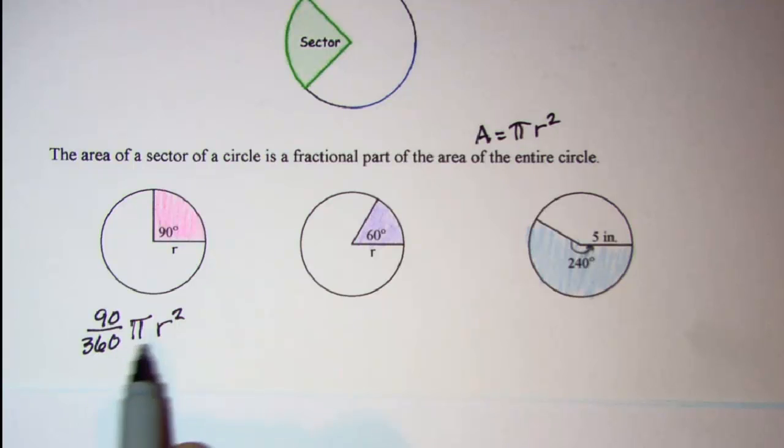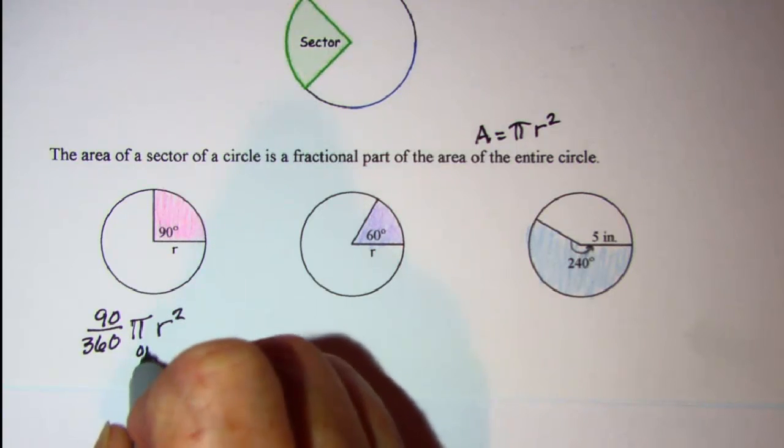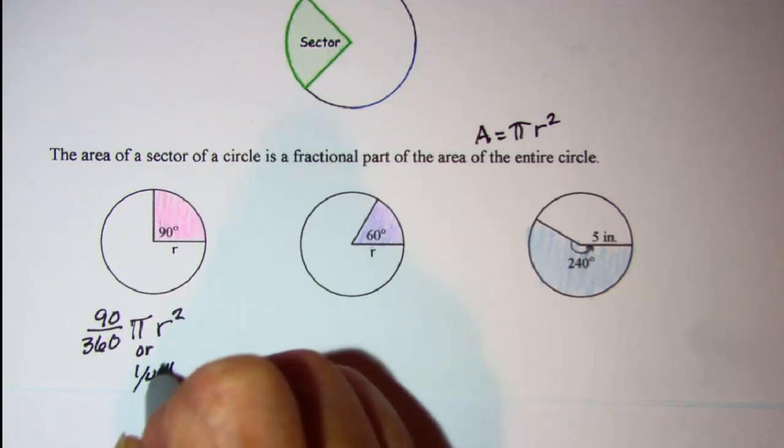Now once you get your radius then you can put that in there and do the math. We can also see that 90 over 360 is the same as 1 fourth, so if you wanted to you could say 1 fourth pi r squared.